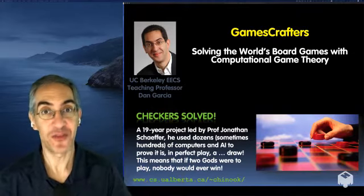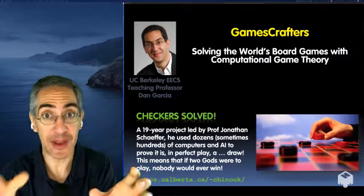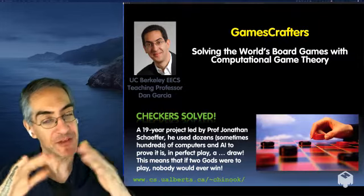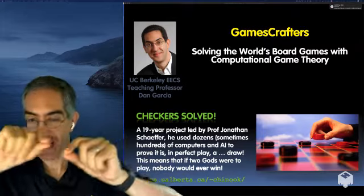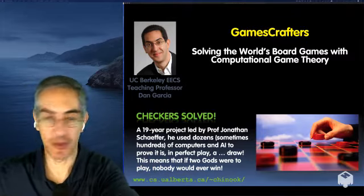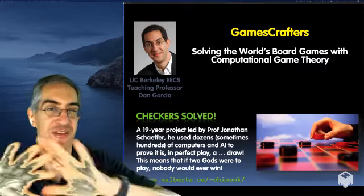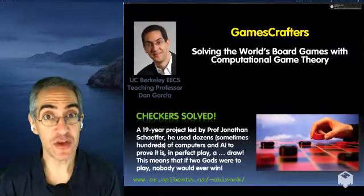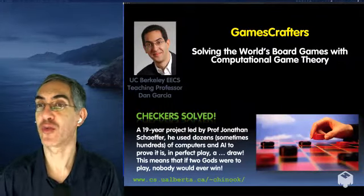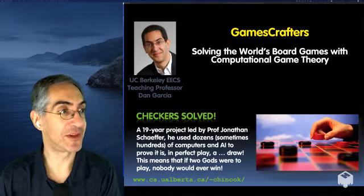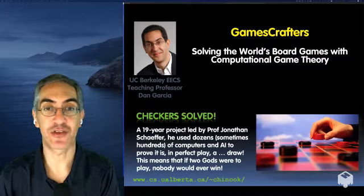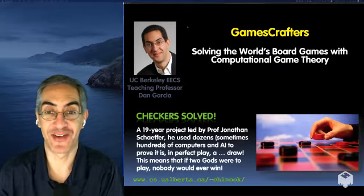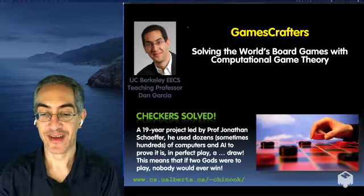Weakly solved means they know if two perfect players played, who would win — and the answer is nobody; it'd be a draw. But 'weakly' means if you went down to some particular position they may not actually know if that position is good or bad, because they used a technique that prunes the game tree. It took 19 years to weakly solve, and that's amazing.